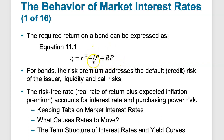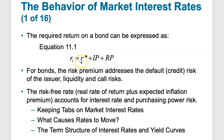The inflation premium is simply the expected inflation. The real rate of return is the rate when you strip out inflation and risk — just the real rate of return after that. Add these three together and that's your expected or required return for a bond.